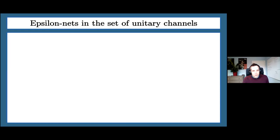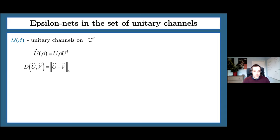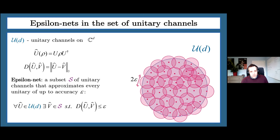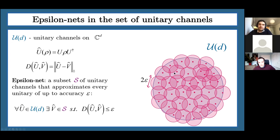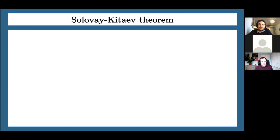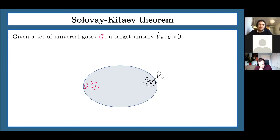What are epsilon nets precisely? Unitary channels are naturally equipped with a metric coming from the diamond norm between quantum channels. We say that some subset S of unitaries forms an epsilon net if any unitary in the full set of all unitaries can be approximated to accuracy epsilon in the diamond norm distance by some element from the set S. In other words, the union of balls of radius epsilon centered around elements of S will fill the whole space of unitary channels. This notion is useful in the context of compilation of quantum gates.